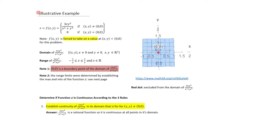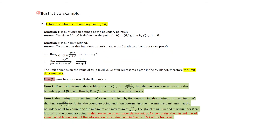The next step is to determine if z is continuous according to the three rules, considering two conditions: continuity excluding the boundary point, and continuity at the boundary point. First, establish continuity in the domain for all points (x, y) not including (0, 0): 3xy²/(x² + y⁴) is a rational function, so it is continuous at all points in its domain. Second, at the boundary point, rule one asks: is the function defined there? Yes — we specifically assigned a value of zero at (0, 0).